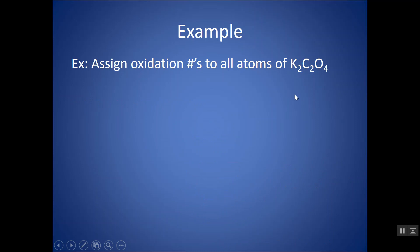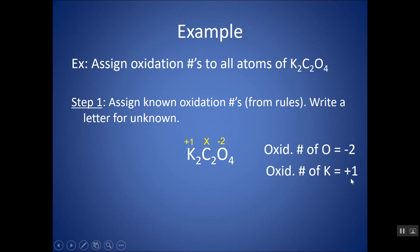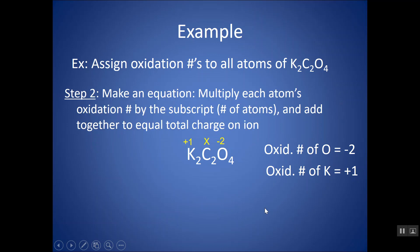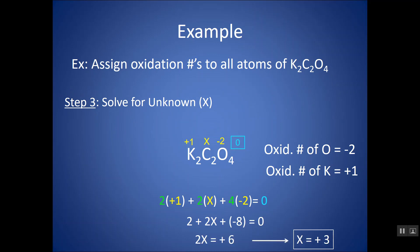Here's another example: K2C2O4. Oxygen is minus two, and potassium is plus one. Solve for carbon. Charge times subscript for each element: 2 × 1 for potassium, 2x for carbon, 4 × (−2) for oxygen, set equal to zero because the compound is neutral. Solving gives x = +3, so carbon's oxidation number is positive three. Don't say plus two for potassium — potassium is plus one.